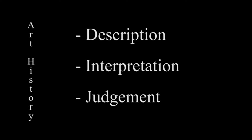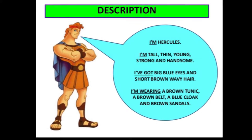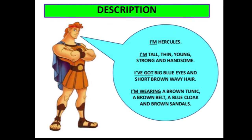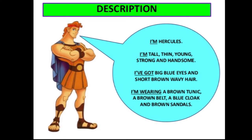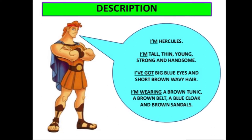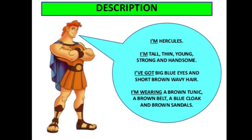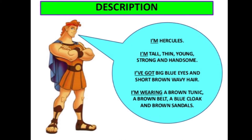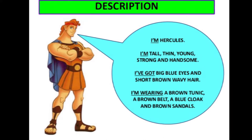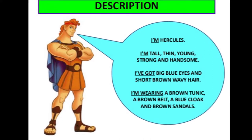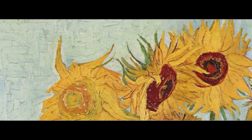For art history in my class we have three things we break down: the description, the interpretation, and the judgment. For the description, students are telling me what they see in that image. Your description point is isolating six things in an image and writing them down on your paper to turn in. Six things that you see — look around that image. If you see a certain color, a certain shape, or something in a painting that seems interesting, put that down.